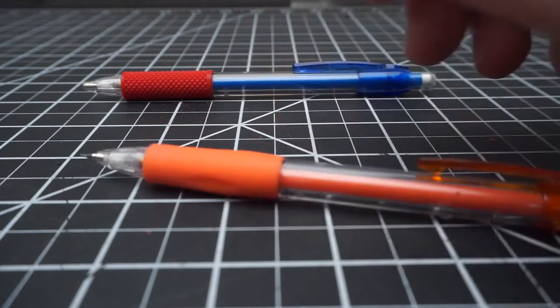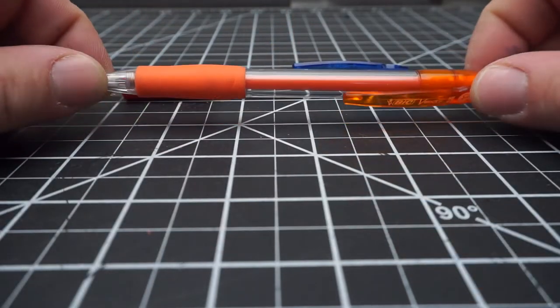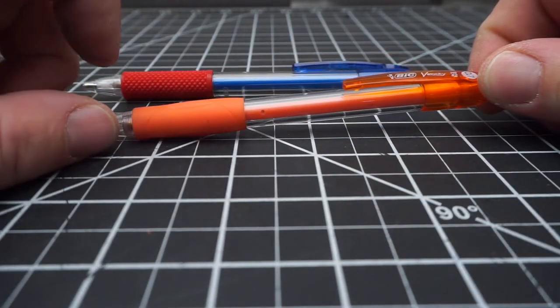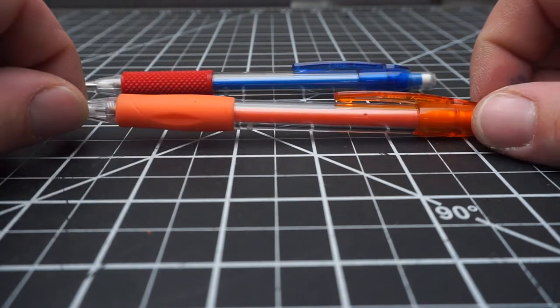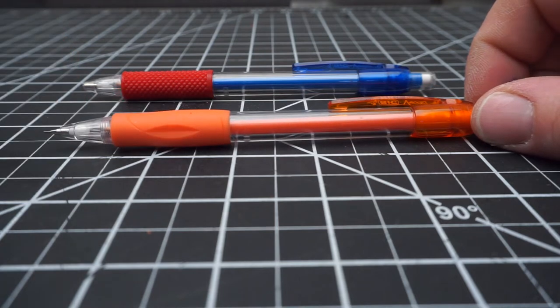And it got me thinking, what other pencils have I written off or pens have I written off that have a rubber grip that I would never use, that I could just replace the rubber grip and they would be otherwise perfect? So let's take a look.